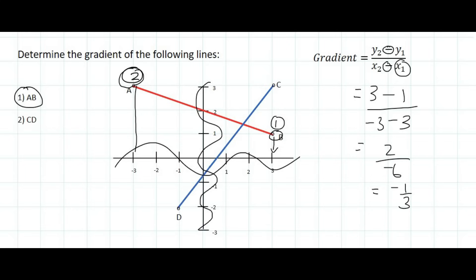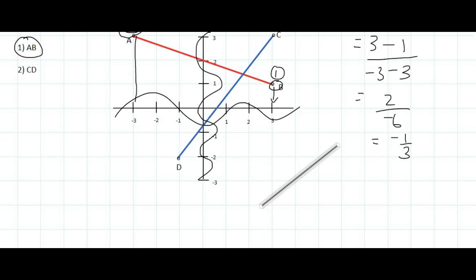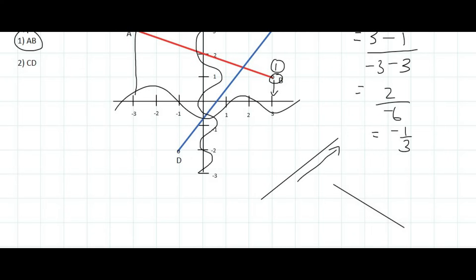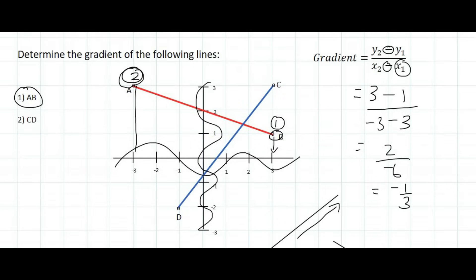The negative is something we haven't seen yet. All that that tells us is that it's a line that is going downwards. So a line going upwards has a positive gradient, whereas a line going downwards has a negative gradient. But if you use the formula correctly, it'll do all of that for you.